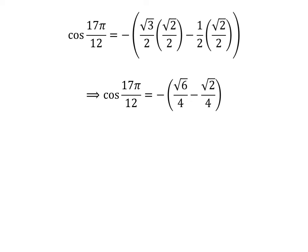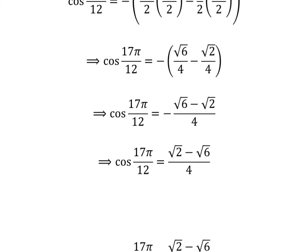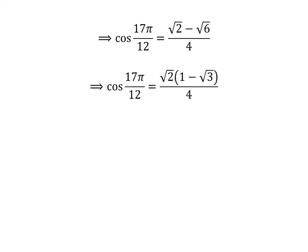Straight multiplication gives us cosine of 17π/12 is equal to minus of (√6/4 − √2/4). As the denominator of both fractions is the same, cosine of 17π/12 equals minus of (√6 − √2) upon 4. Minus of (√6 − √2) is equal to (√2 − √6), and taking out the common factor √2 in the numerator gives us cosine of 17π/12 is equal to √2·(1 − √3) upon 4.